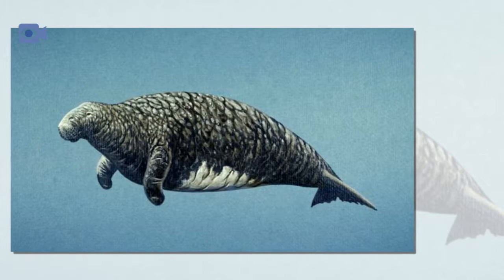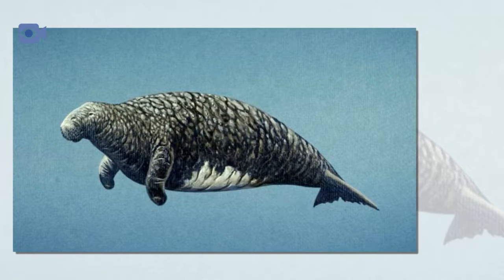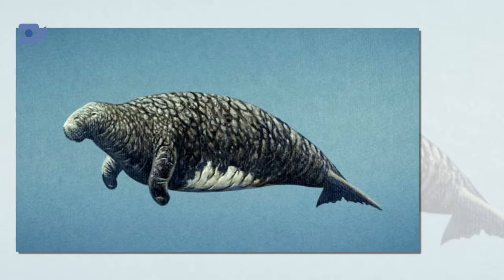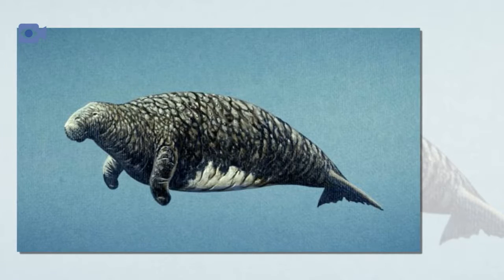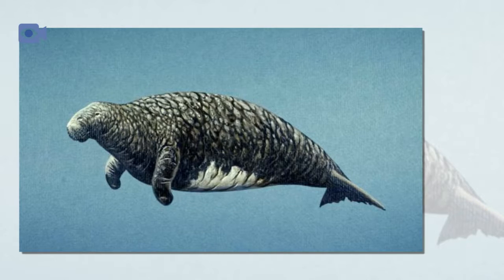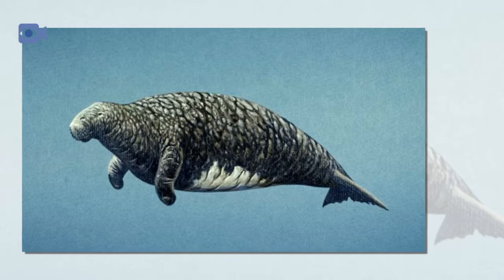The Steller's sea cow was first discovered in 1741 by explorers that ventured into parts of the Arctic Circle. When they were first recorded, the Steller's sea cow was said to be living in abundance in the North Pacific. However, in less than 20 years of human contact, the Steller's sea cow had disappeared from the ocean completely.